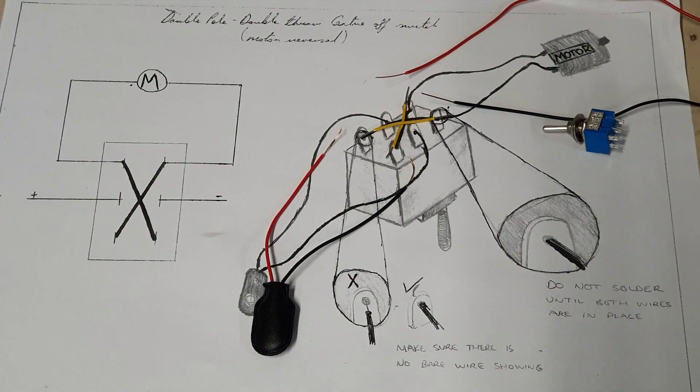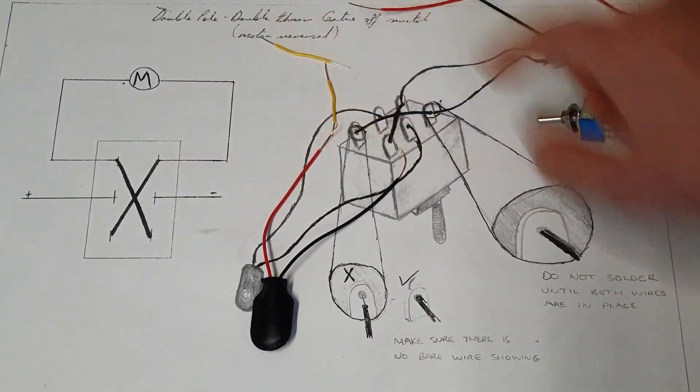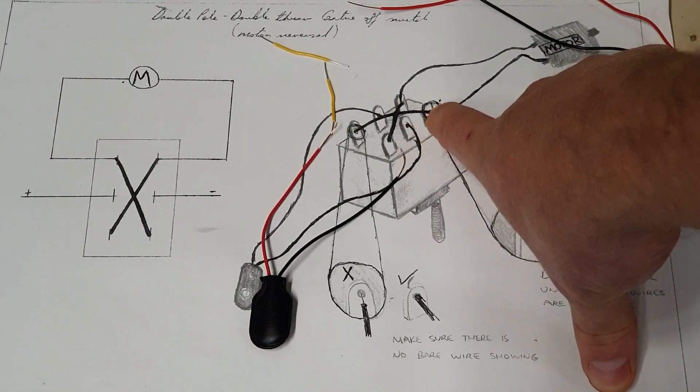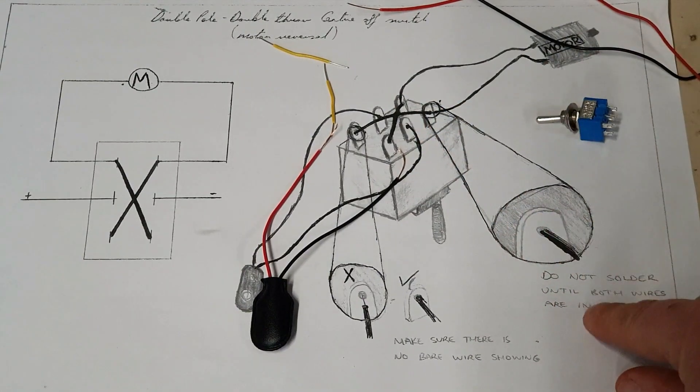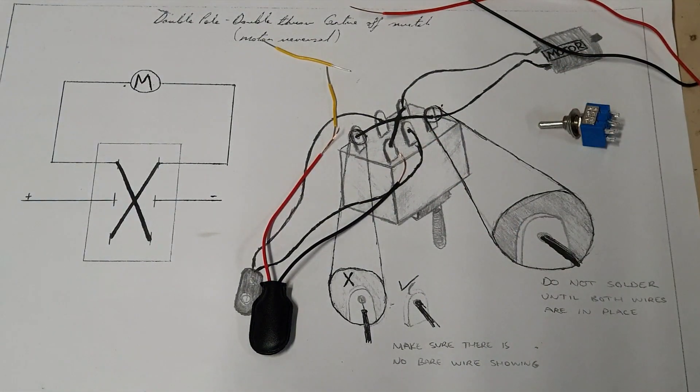Now what people often make a mistake on here is if you see these terminals. So I've zoomed in on it closely here. There's going to be two wires going into these terminals. So you do not solder until both of the wires are in place on these terminals. So we'll get into the actual soldering of it now.